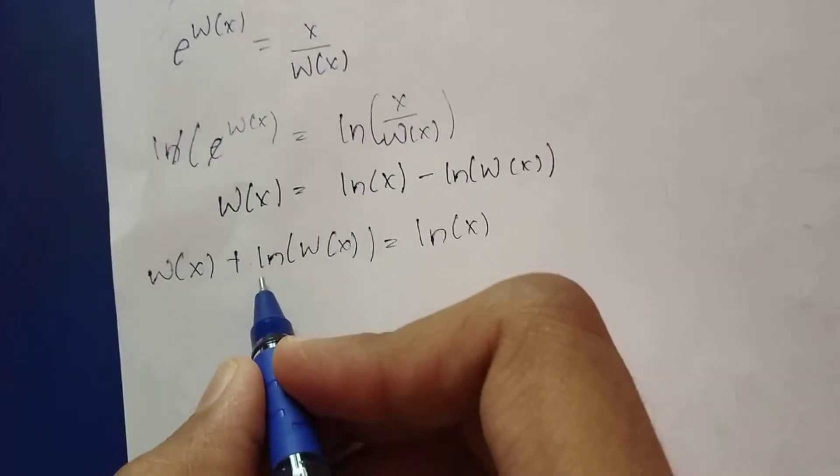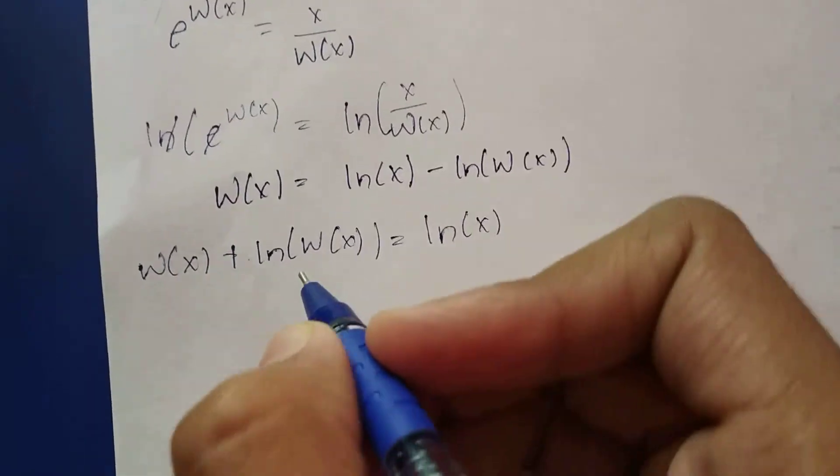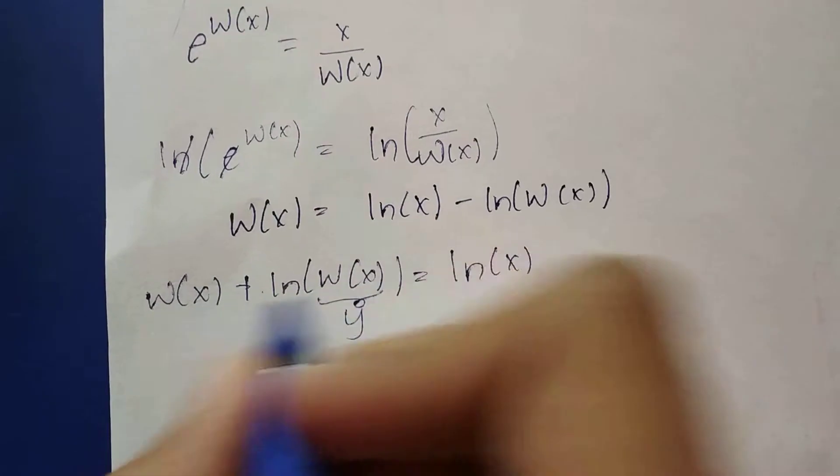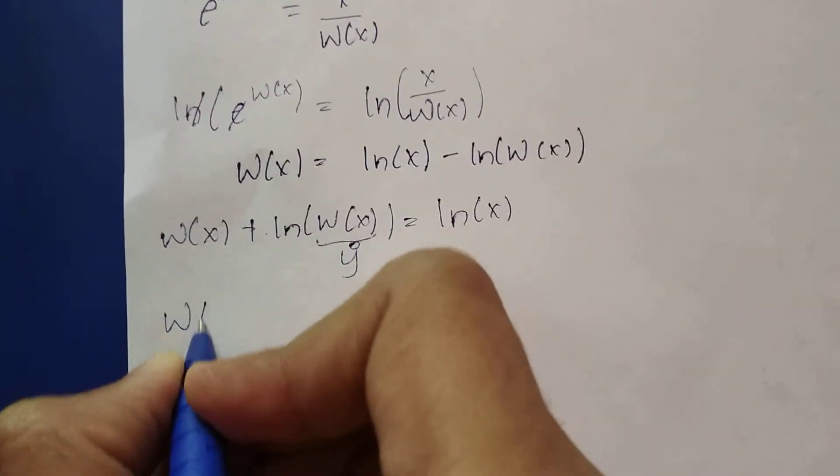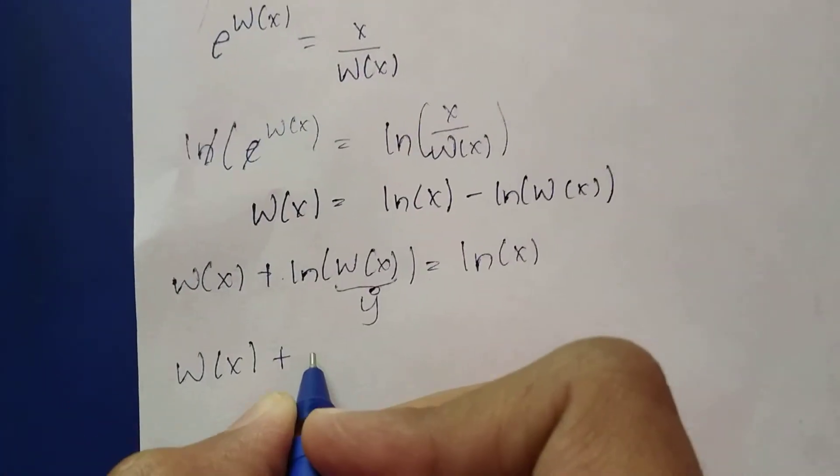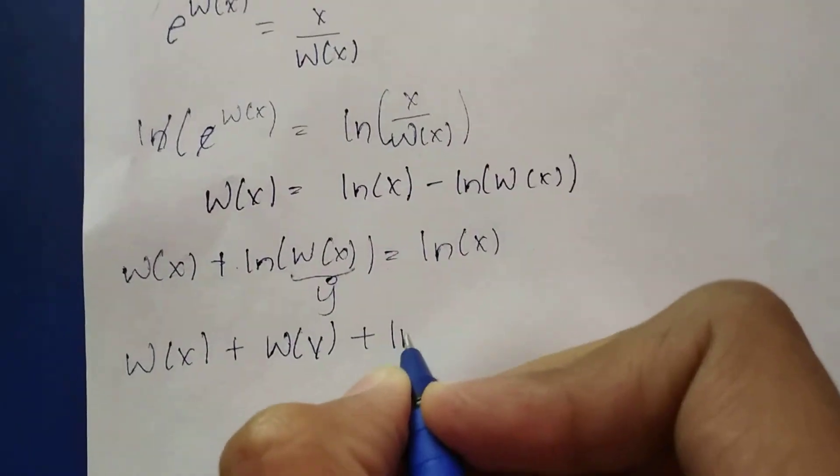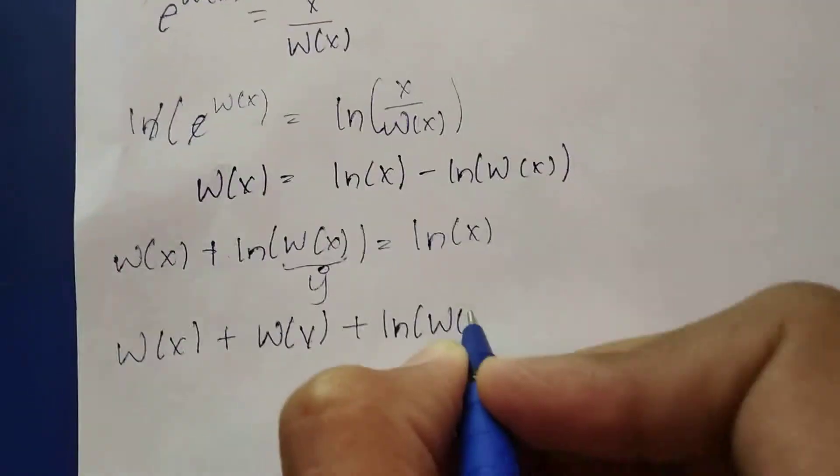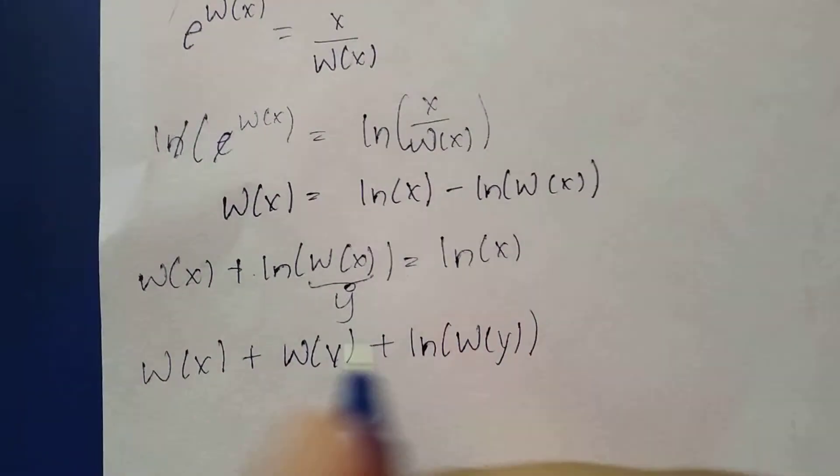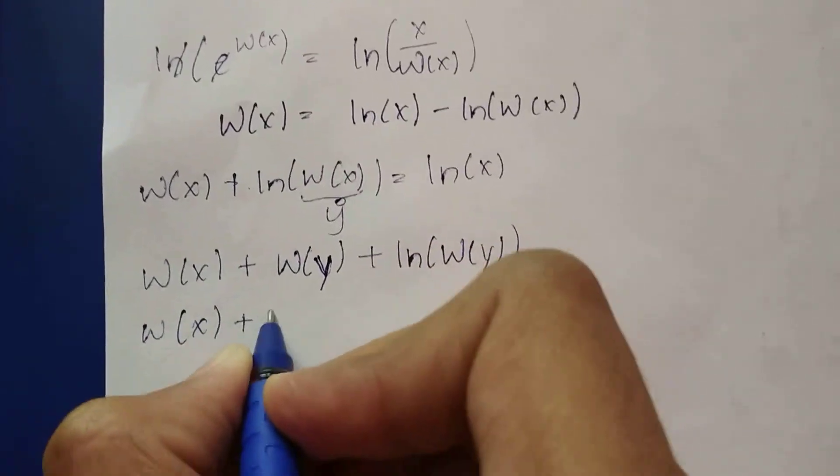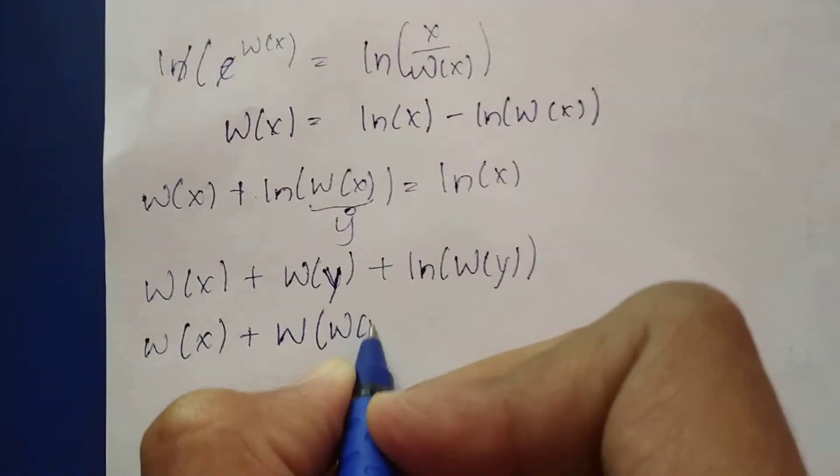I can again use this formula here, so it will be W(X) plus W(Y) plus ln(W(Y)). What is W(Y)? It is W of X plus W function for W(X). From here we can see that Y is W(X).